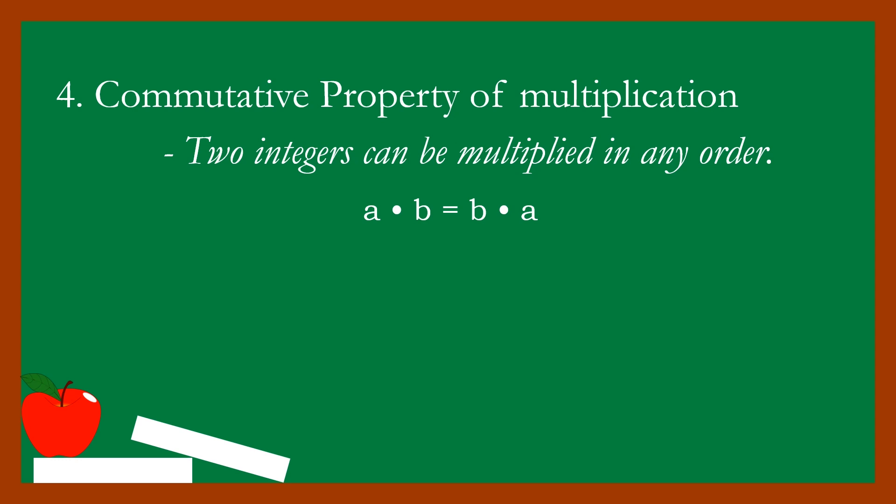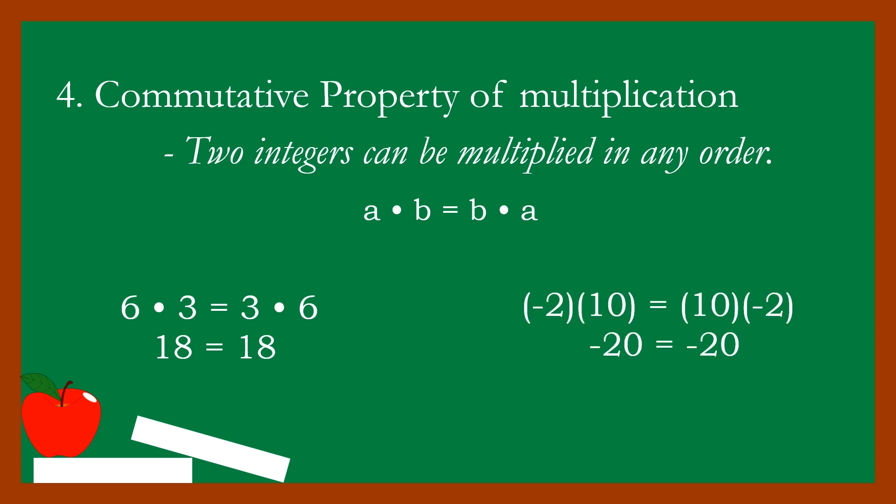For example, six times three is equal to eighteen, and three times six is also equal to eighteen — even with reversed order, the result is the same. Next example: negative two times ten is equal to negative twenty, and ten times negative two is also equal to negative twenty.